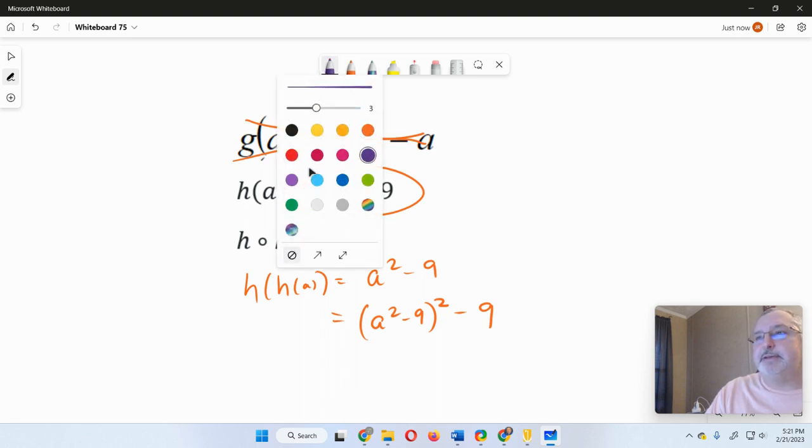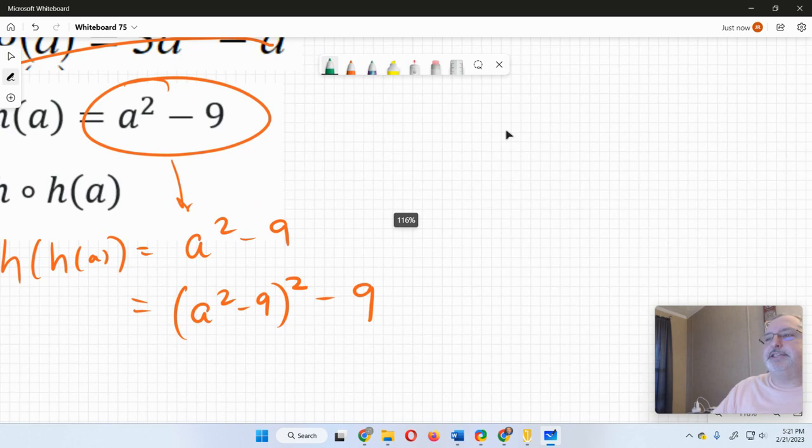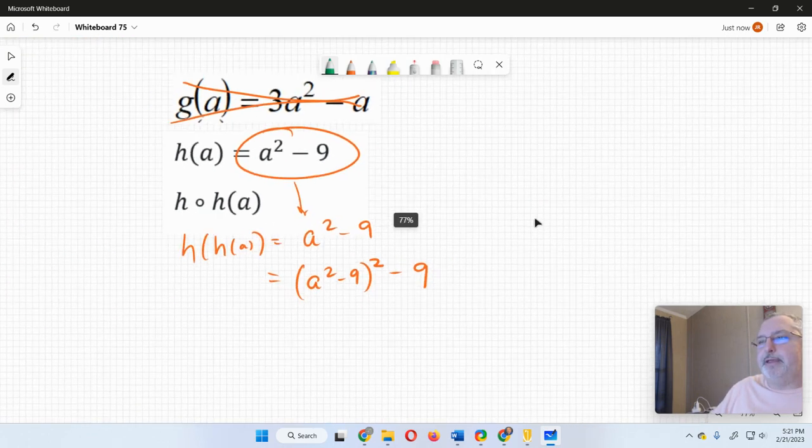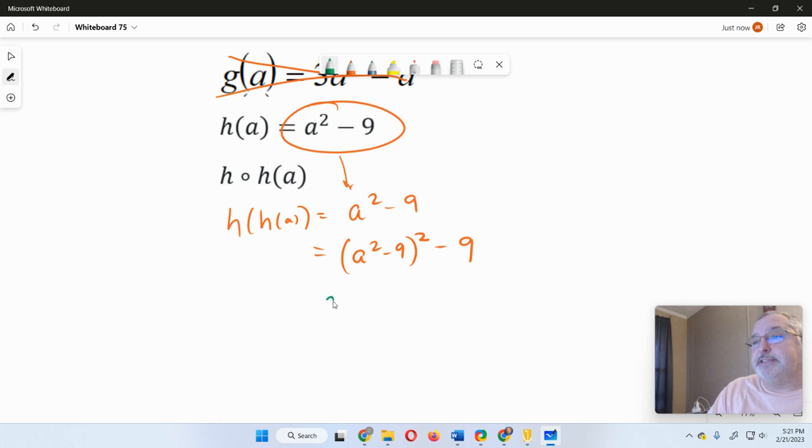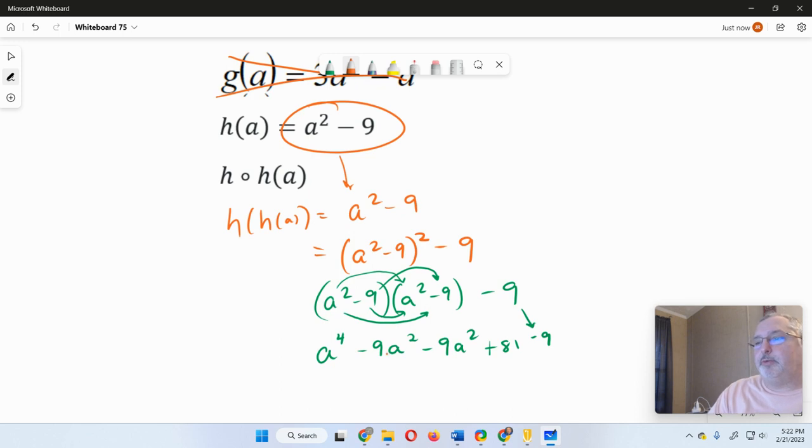Again, we're going to use techniques that we've learned throughout Algebra 1, Algebra 2, and even occasionally some things in geometry, but this one's just using some stuff we learned in Algebra 1. So this is going to be a squared minus 9 times a squared minus 9 minus 9. So we'll apply FOIL here. So that'll be a to the fourth power minus 9a squared. Then we'll have minus 9a squared again, plus 81. And then we'll bring down minus nine.